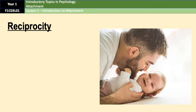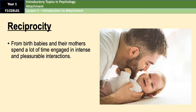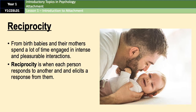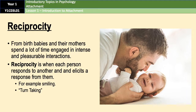From birth, babies and their primary carers spend a lot of time engaged in interactions. Reciprocity is a turn-taking form of interaction where each person responds to the other and elicits a response from them. For example, a caregiver might respond to a baby smiling by saying something, which in turn elicits a response from the baby — like another smile, a laugh, or a coo. It is effectively a conversation, except the baby can't talk, but the interaction happens on a turn-taking basis, going backwards and forwards.